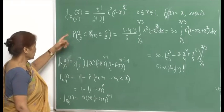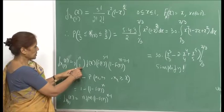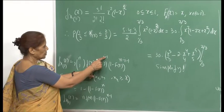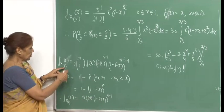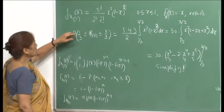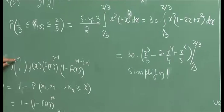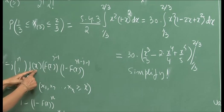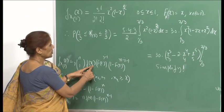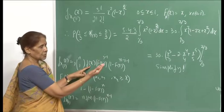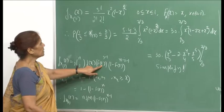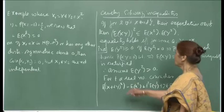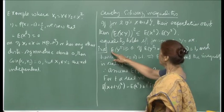By our formula, the PDF of the j-th order statistic is n choose j times j times f(x) times F(x)^{j-1} times (1-F(x))^{n-j}. Put j = 3 and n = 5: this gives 5 choose 3 times 3 times f(x) times F(x)^2 times (1-F(x))^2. For the uniform distribution, the PDF f(x) = 1 and F(x) = x on [0,1].